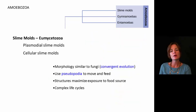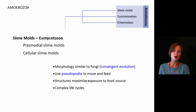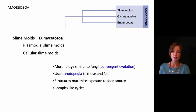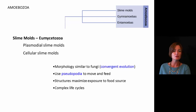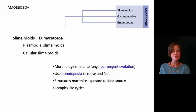Now we have the typical amoebas, and then we also have what are called the slime molds, which are very unique structures. We have plasmodial slime molds and also cellular slime molds. Overall they have a morphology — a shape and appearance — that's very similar to fungi, and one reason for this is the process of convergent evolution.